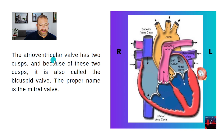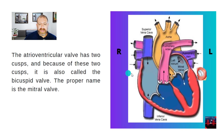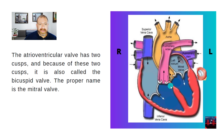The atrial ventricular valve has two cusps, and because of these two cusps it is also called the bicuspid valve. The proper name is the mitral valve.